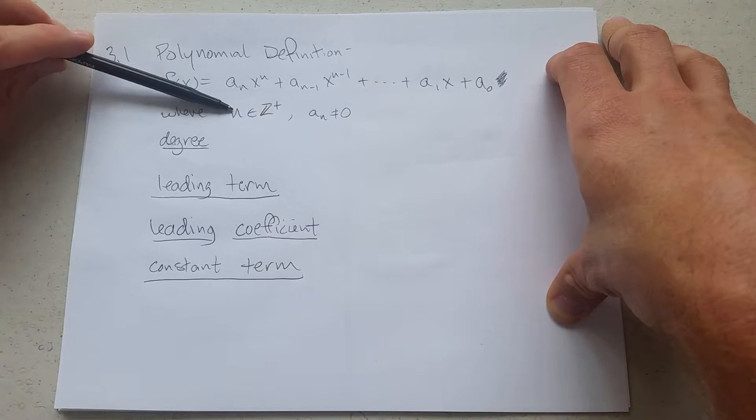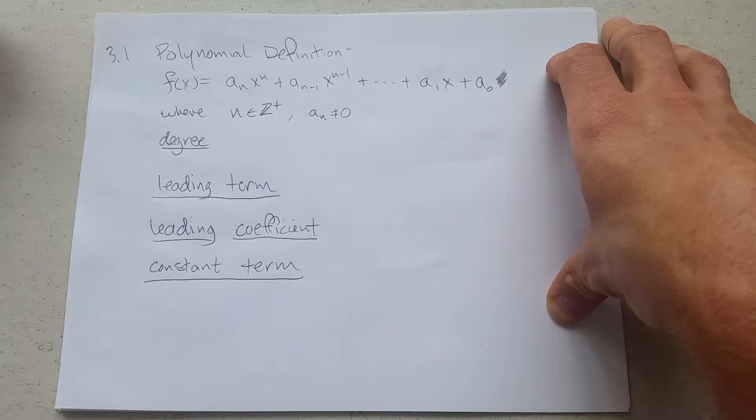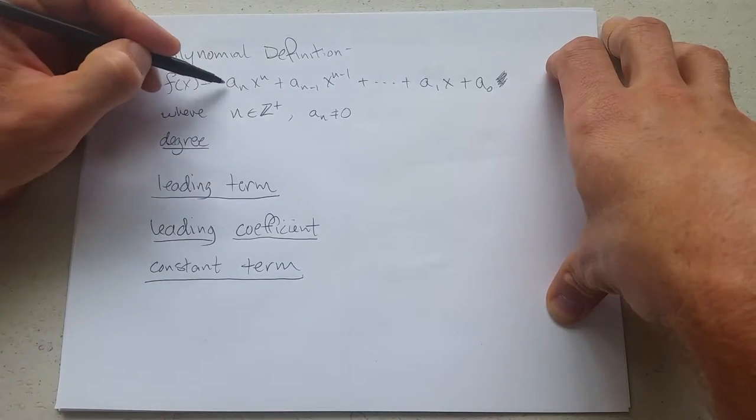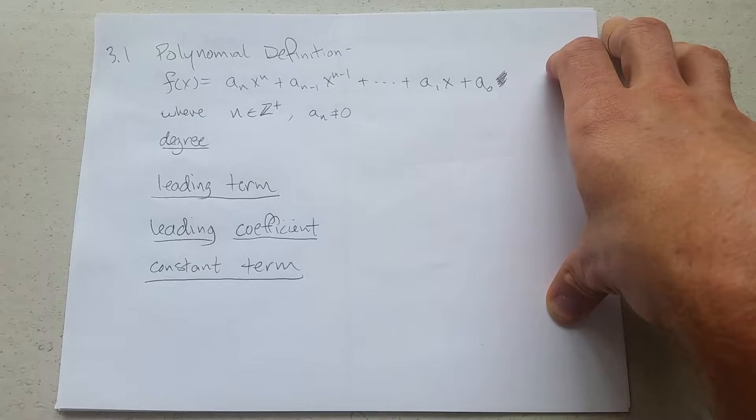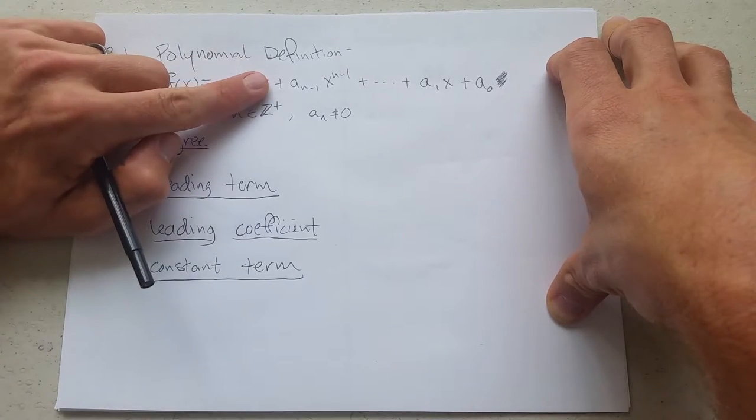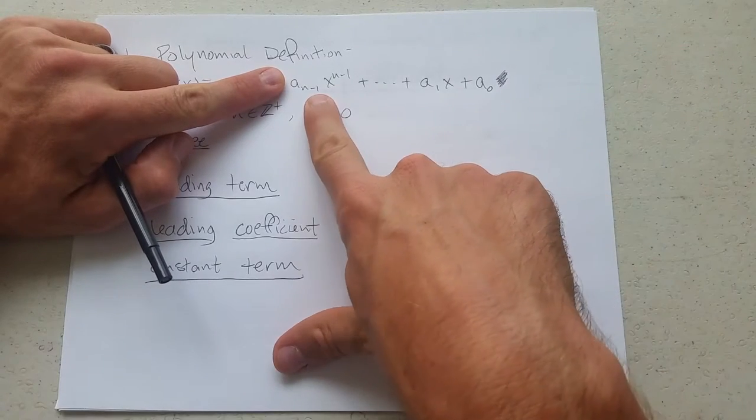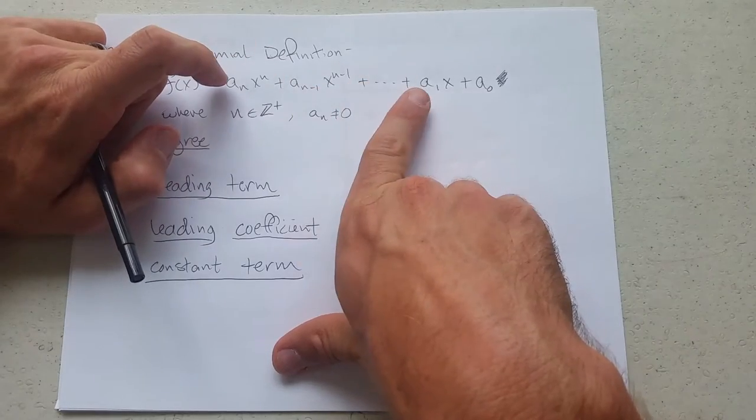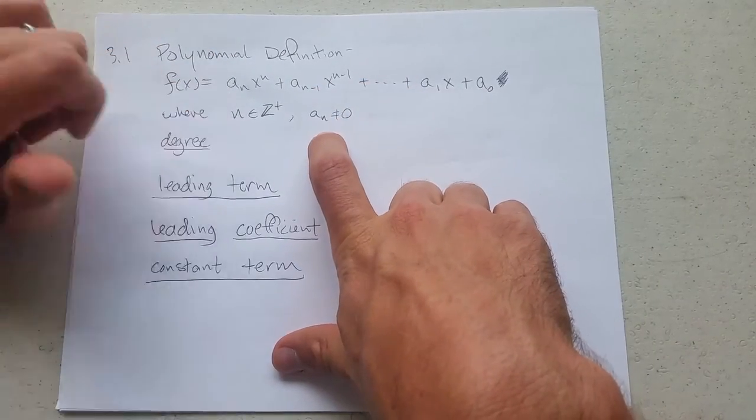So this just says n is a positive integer and a_n, that is the first coefficient right here, cannot equal zero. What happens if it does equal zero? Well, if this is zero, this whole term will disappear, and this would then be the leading term. So by default, we just say whatever is the first non-zero term, that's where you start right there.